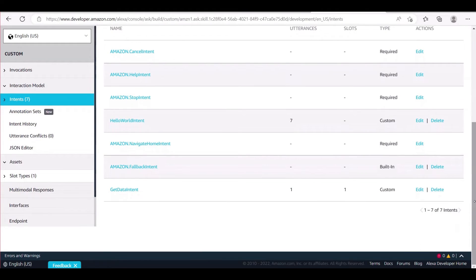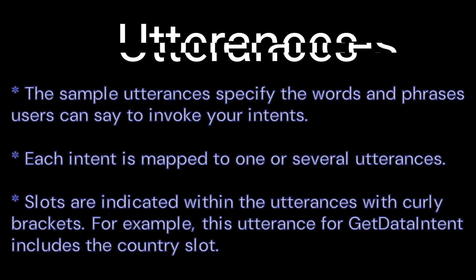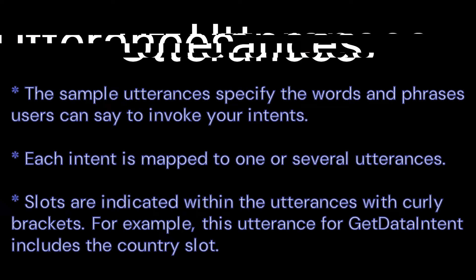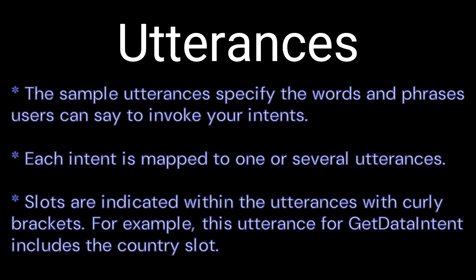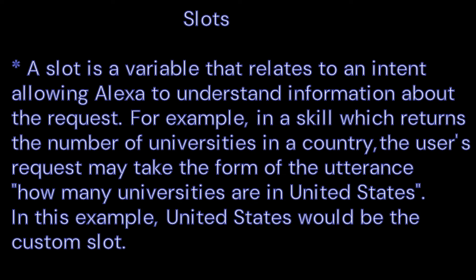You can see a custom intent named GetDataIntent which returns the number of universities in a picked country. Moving on, we define utterances. The sample utterances specify the words and phrases users can say to invoke your intents. Each intent is mapped to one or several utterances. Slots are indicated within the utterances with curly brackets. For the GetDataIntent, I write the following utterance: 'How many universities are in {country}?'